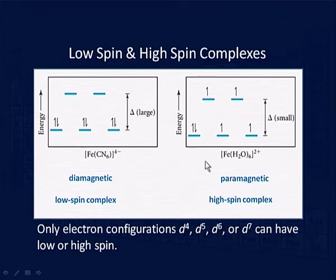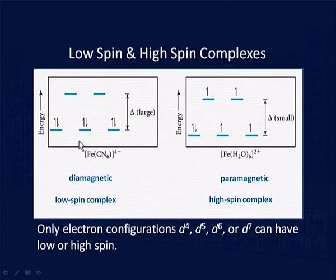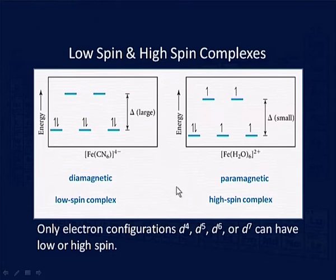d¹, d², and d³ complexes will always be low spin complexes, but from d⁴ onwards, complexes can be either high spin or low spin depending on the value of delta and the pairing energy. If delta is very large, electrons will try to remain paired; if delta is small, electrons will remain unpaired. Therefore, we can observe either diamagnetism or paramagnetism depending on these conditions.